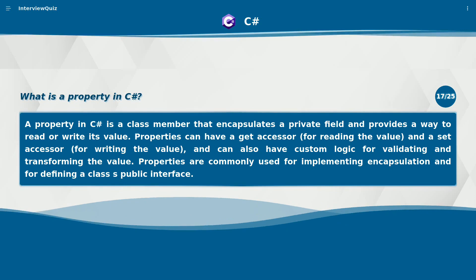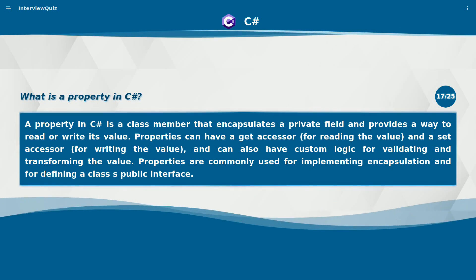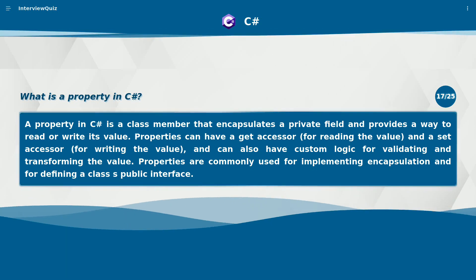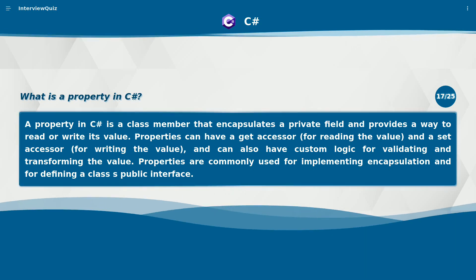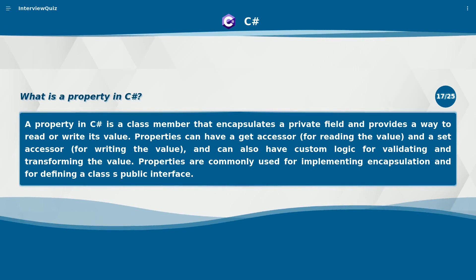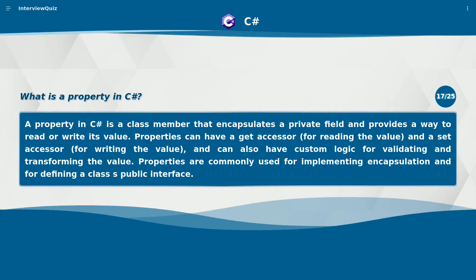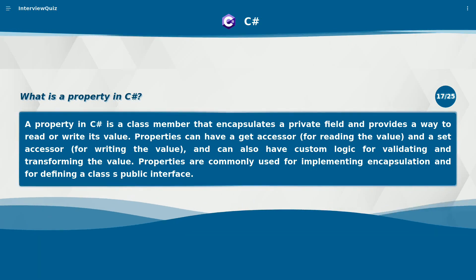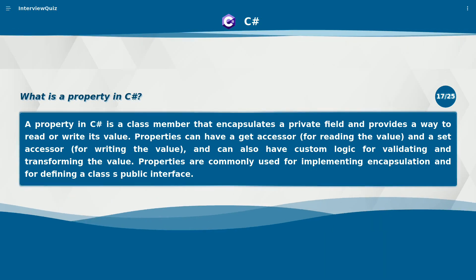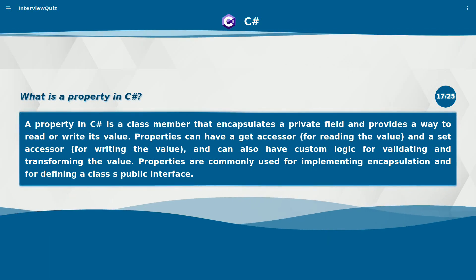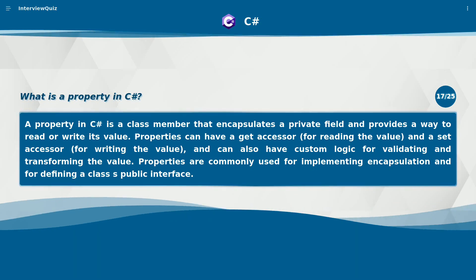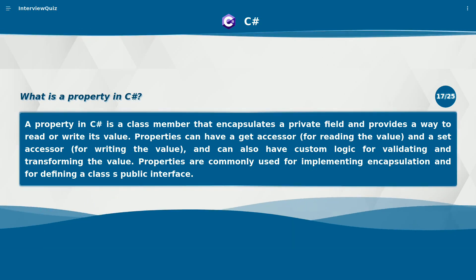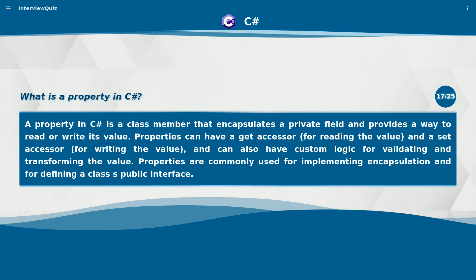What is a property in C#? A property in C# is a class member that encapsulates a private field and provides a way to read or write its value. Properties can have a get-accessor for reading the value and a set-accessor for writing the value, and can also have custom logic for validating and transforming the value. Properties are commonly used for implementing encapsulation and for defining a class's public interface.